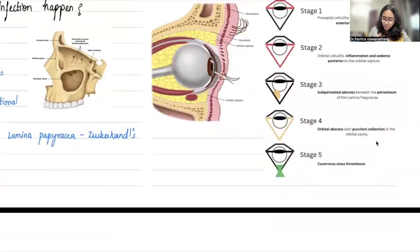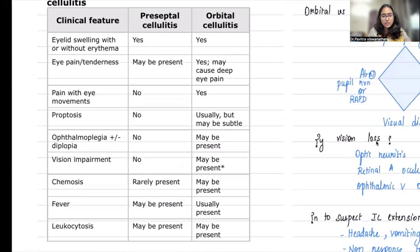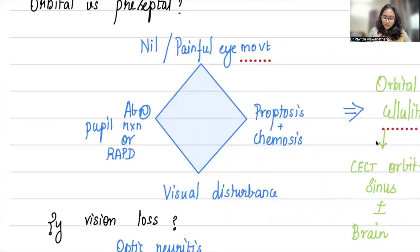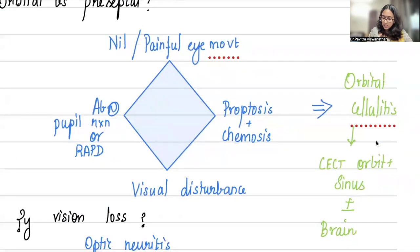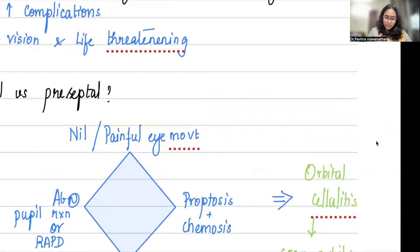Why do you need to know these stages, and how will you know clinically? It's important to differentiate between preseptal and orbital cellulitis. For practical purposes, these four points are extremely important. You will look for: painful eye movement or no movement at all, proptosis (eye popping out), significant chemosis, or visual disturbance with abnormal pupillary reaction or RAPD. If these are there, it points more towards orbital cellulitis.